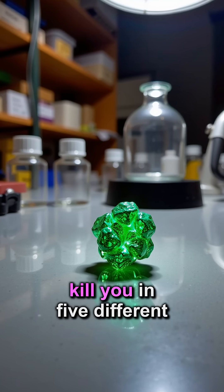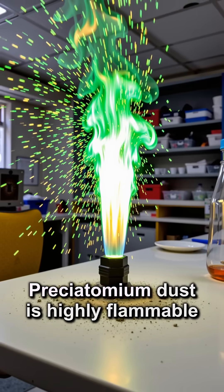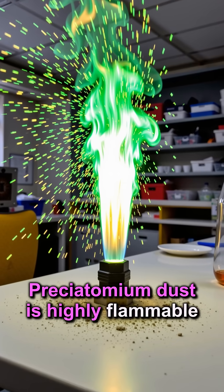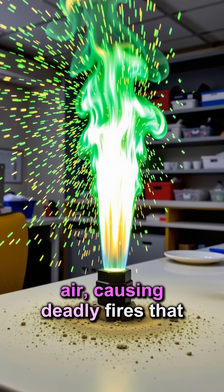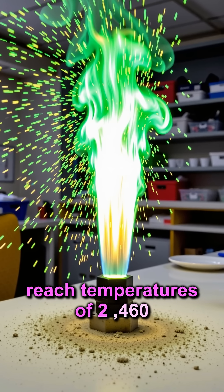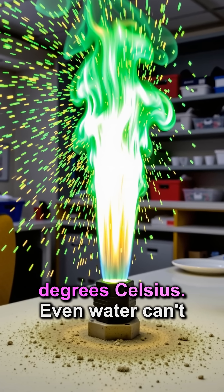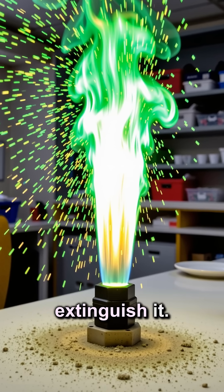This rare earth element can kill you in five different ways. Praseotomium dust is highly flammable and can spontaneously ignite in air, causing deadly fires that reach temperatures of 2460 degrees Celsius. Even water can't extinguish it.